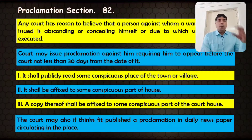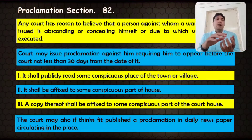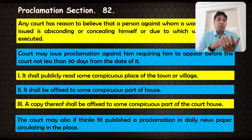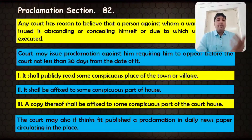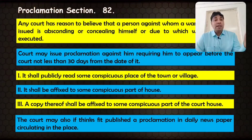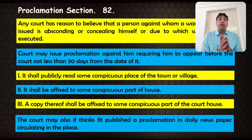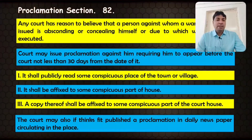So, proclamation will be issued against a person against whom a warrant was issued but the warrant is not being executed because that person has absconded or is concealing himself. In such a situation, the court will issue a proclamation against him and give him 30 days' time. The proclamation will also include a warning: if you fail to present before the court of law within the required time, your movable and immovable property will be attached.